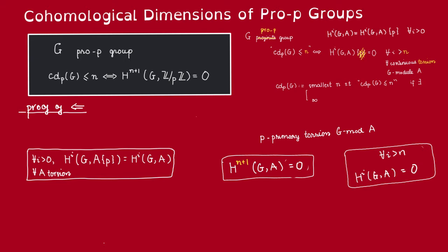We'll break the proof down into three parts. The first two parts are about replacing Z/pZ with the continuous torsion G-module. Our first claim is that for any torsion A-module, this cohomology group doesn't change if we replace A with the p-primary part of A. This will allow us to just assume that A is p-primary torsion. Then from here, we bring it down to Z/pZ by looking at a decomposition series of A. From that, we will get that H^{n+1}(G, A) is going to be equal to 0.